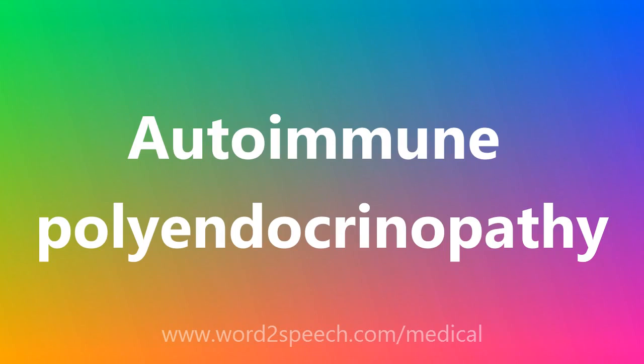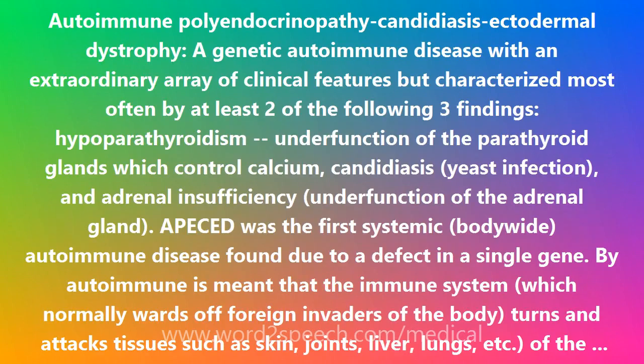Autoimmune Polyendocrinopathy Candidiasis Ectodermal Dystrophy: a genetic autoimmune disease with an extraordinary array of clinical features, but characterized most often by at least two of the following three findings: hypoparathyroidism — underfunction of the parathyroid glands which control calcium — candidiasis, a yeast infection, and adrenal insufficiency, underfunction of the adrenal gland.